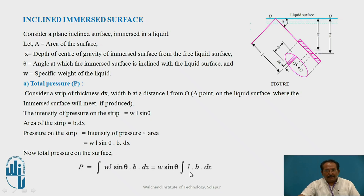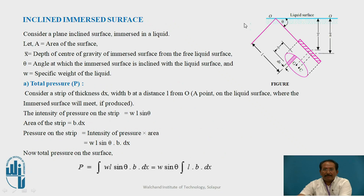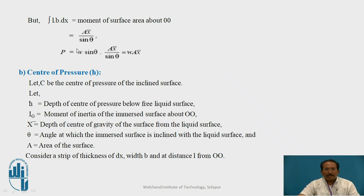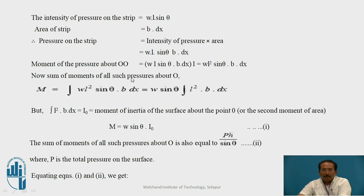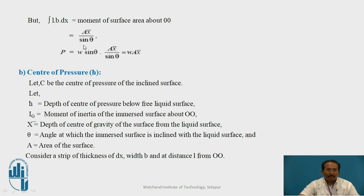Taking w·sin θ out of the integration, we have integration of l·b·dx, which is the moment of the surface area about O. Using trigonometry, since sin θ equals opposite over hypotenuse, l equals x-bar upon sin θ. Substituting, P equals w·sin θ · A · x-bar / sin θ, and sin θ cancels to give P equals w·A·x-bar.